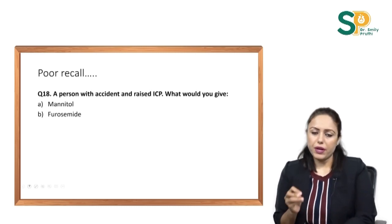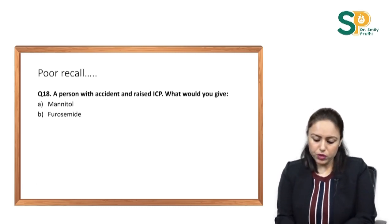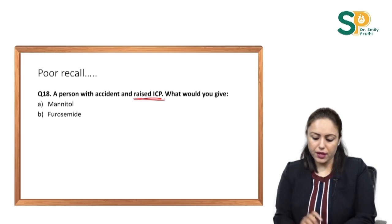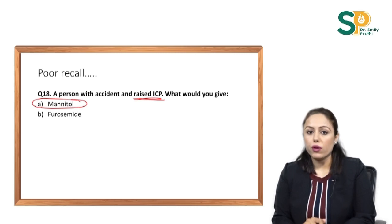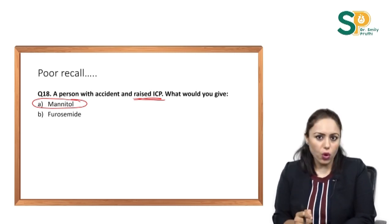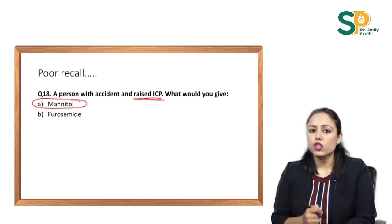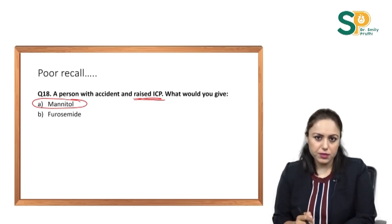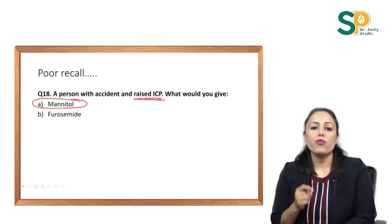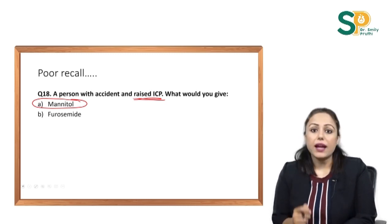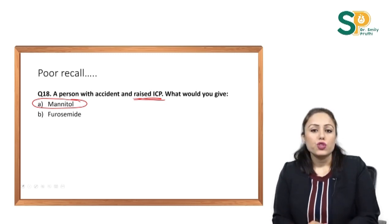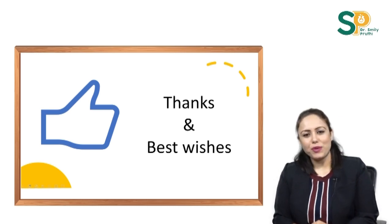The last question, which is a poor recall: a person with an accident and raised intracranial pressure — what will you give? We give mannitol, which decreases intracranial pressure as it is a hygroscopic alcohol made from the reduction of carbohydrates. A detailed video with full explanations is available in the app for users. Thanks for watching and best wishes to you.